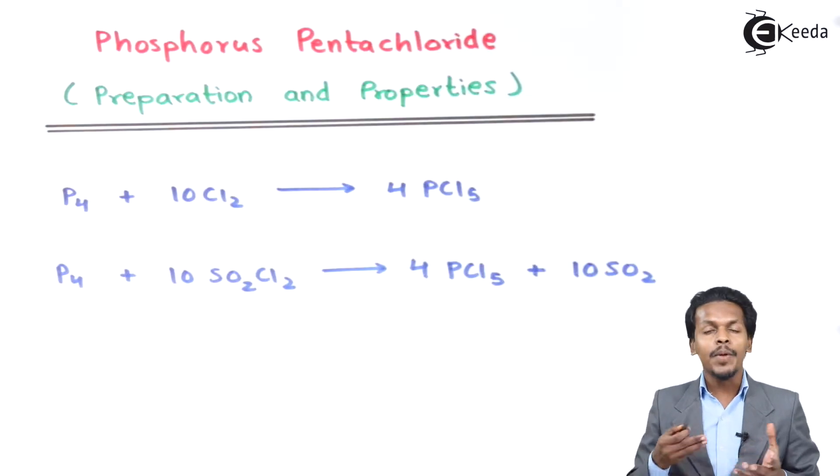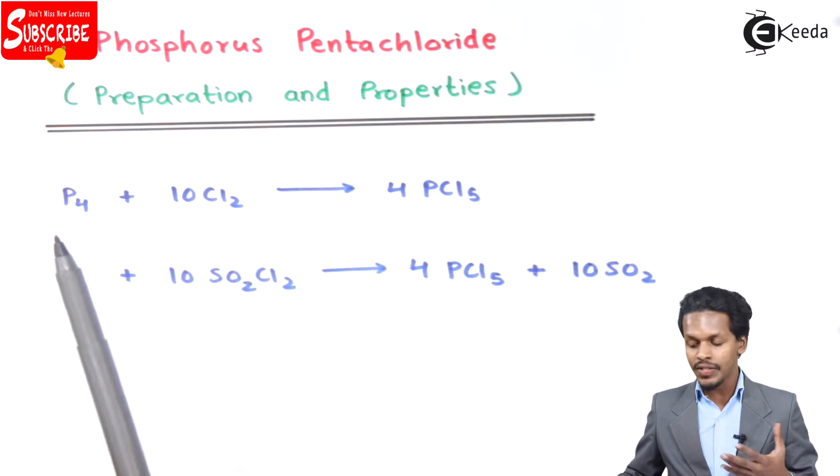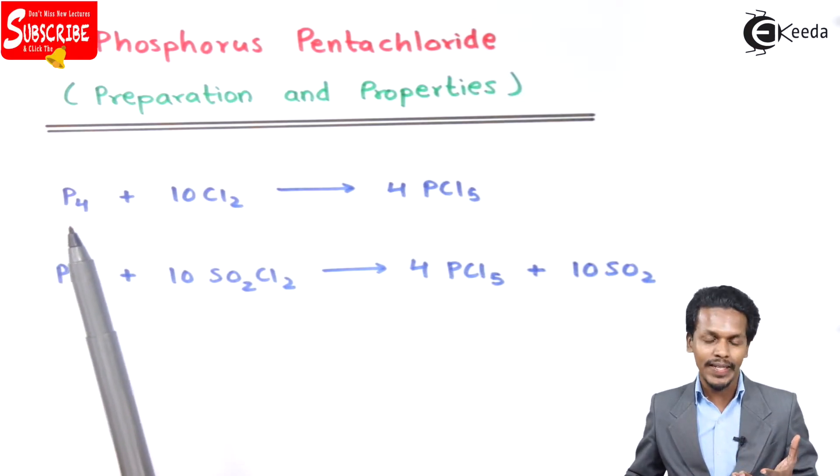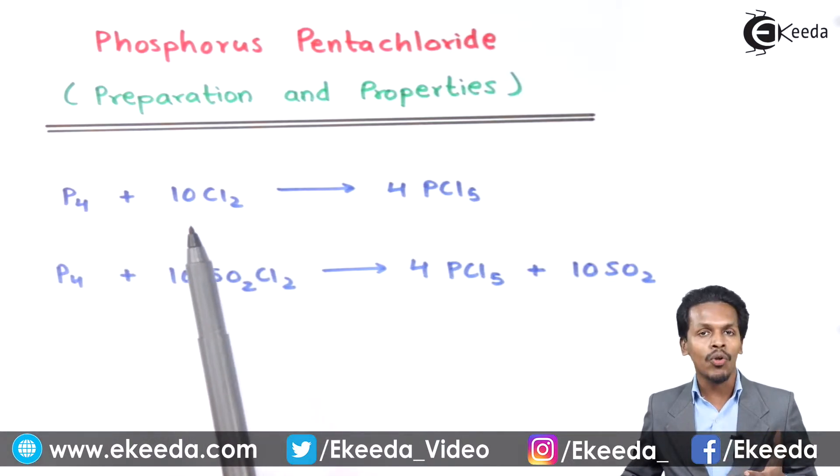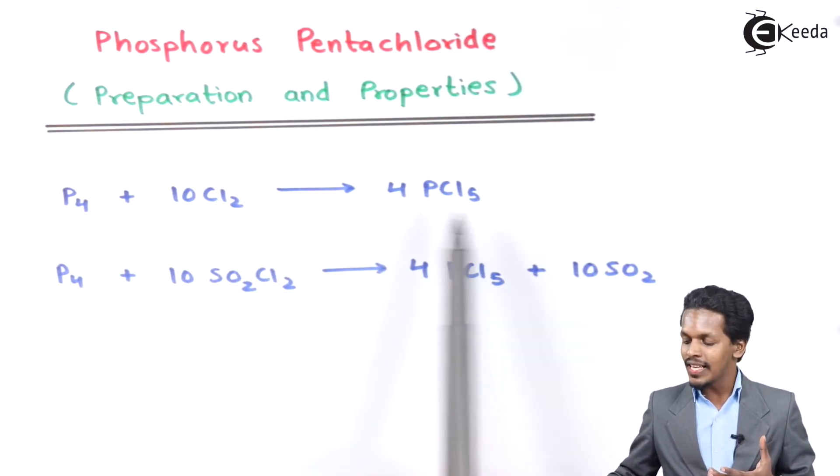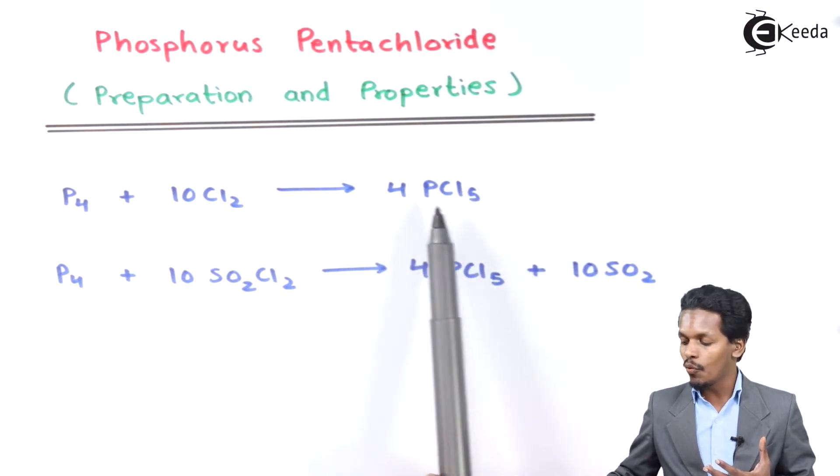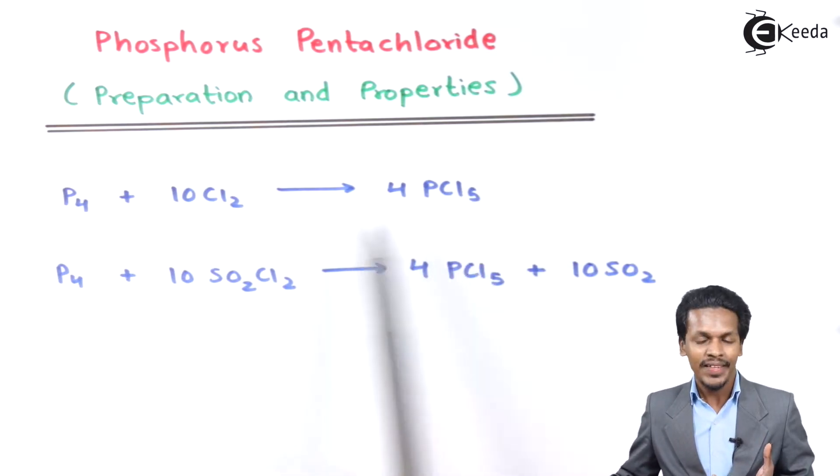Now let me talk about the preparation of phosphorus pentachloride. In this case, we have a few reactions. The first one: whenever white phosphorus, P4, is reacted with excess chlorine, 10 moles of Cl2, the product we get is 4 moles of PCl5. This is one method to prepare phosphorus pentachloride.